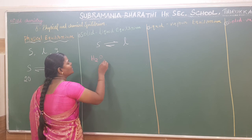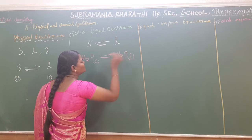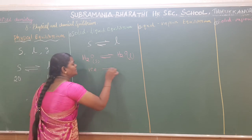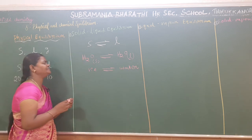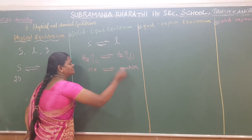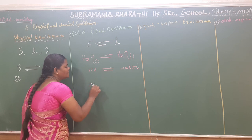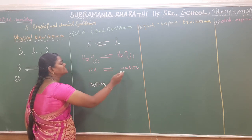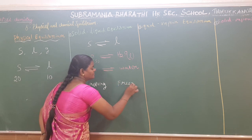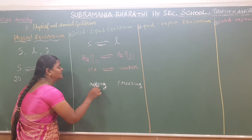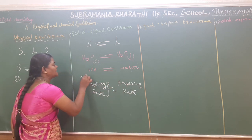Water exists in a solid state — that is ice. It is converted into a liquid, which is called water. So ice is converted into liquid form. When ice melts, it is converted to liquid. The water is again converted back to ice — that is called freezing. The rate of melting should be equal to the rate of freezing.